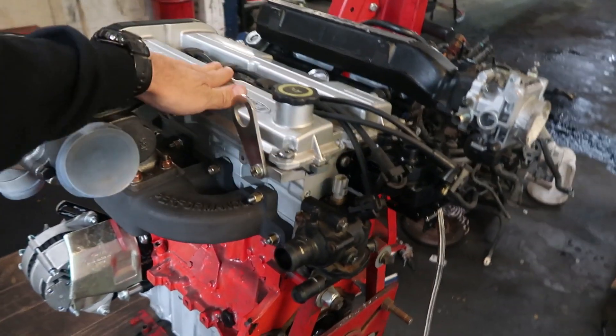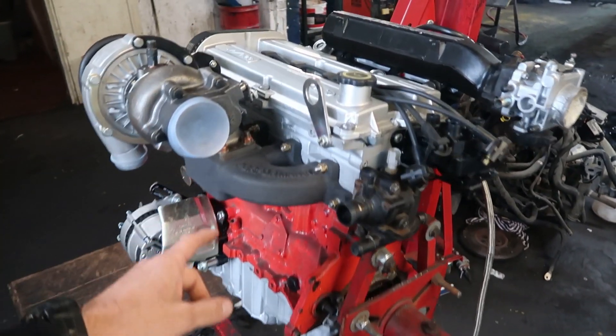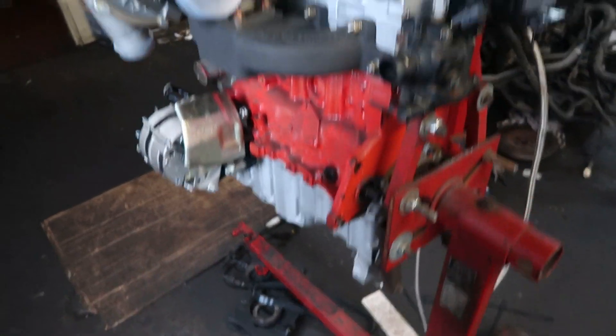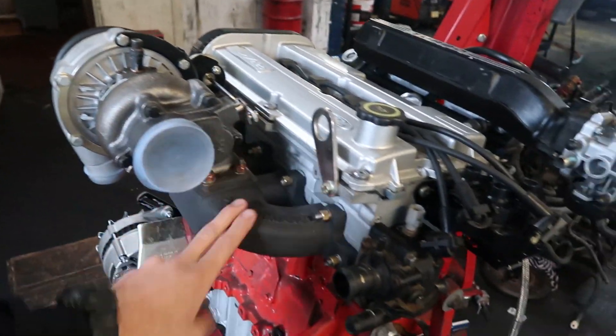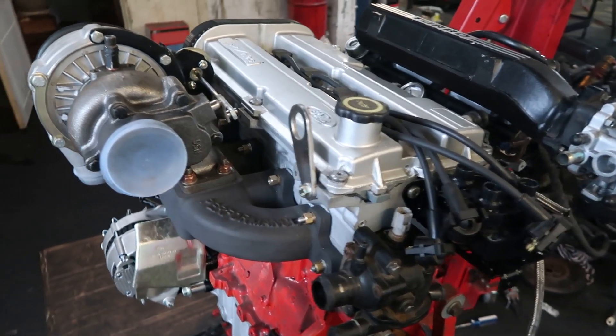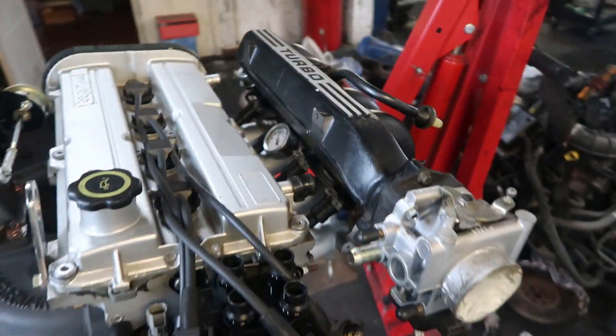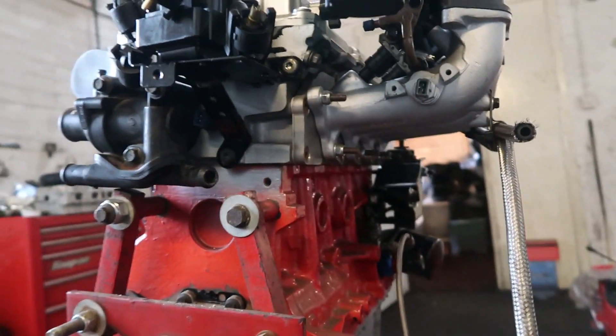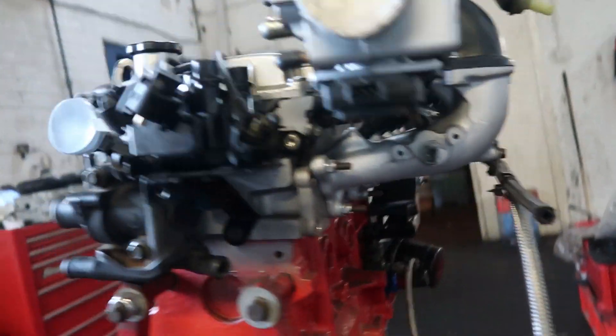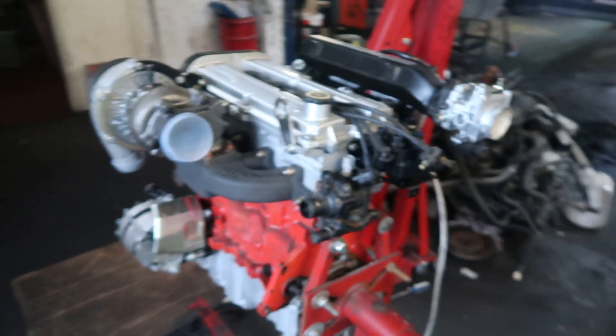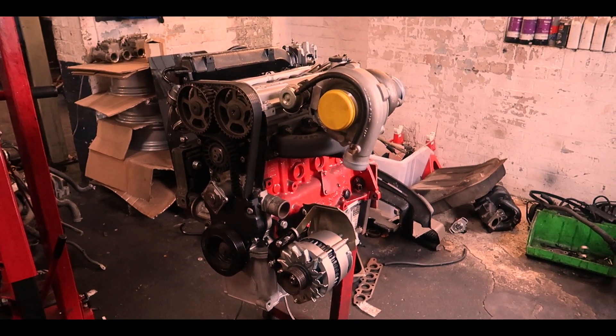So this is the engine here, it's a 2 litre Zetec motor, Wossner forged pistons, Pec rods, polished crank, rebuilt head, T34 turbo on a Boost Performance cast exhaust manifold, and he's made a really nice job of this. This is a Rover 800, believe it or not, inlet manifold on an adapter plate onto the Zetec head, and Andy's ported all that manifold out really nice. It's going to be a right good little motor.